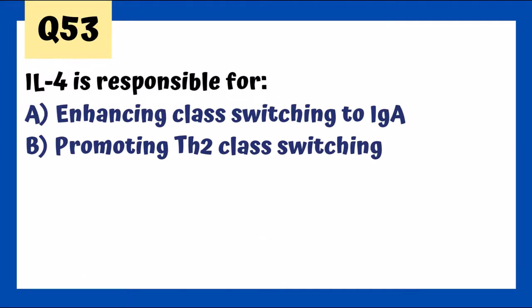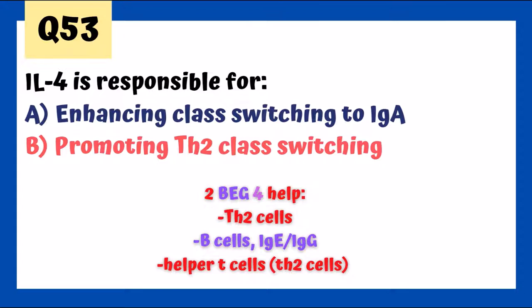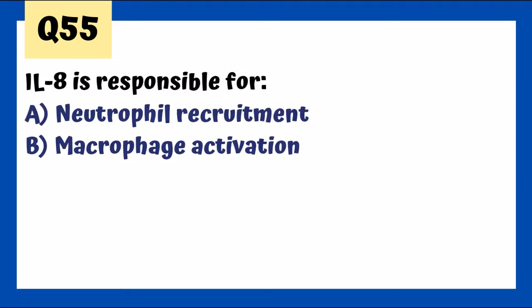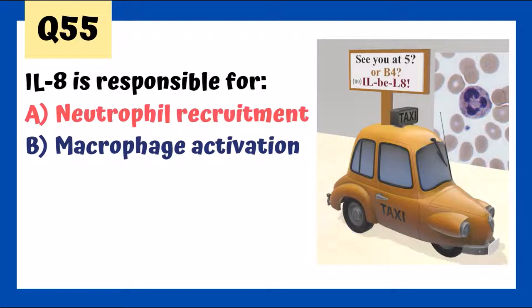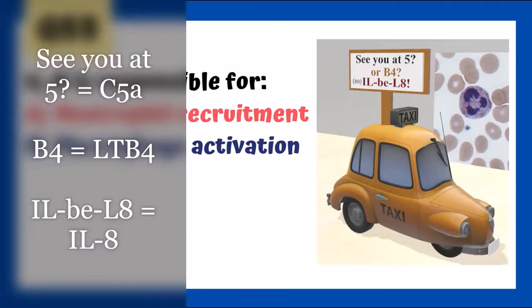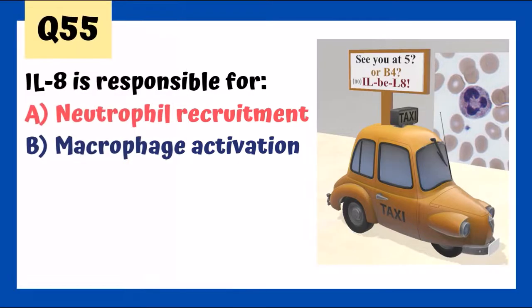IL-5 promotes growth and differentiation of B-cells, enhances class switching to IgE/IgA, and stimulates growth of eosinophils. IL-8 is responsible for neutrophil recruitment. The mnemonic: C-W-5 for C5a, 'I'll be late' for LTB4, and IL-8 — all lead to neutrophil recruitment.